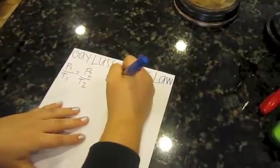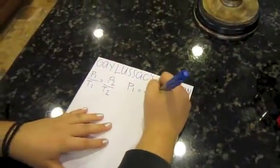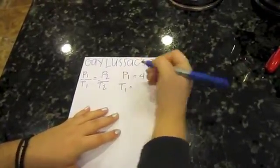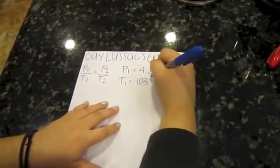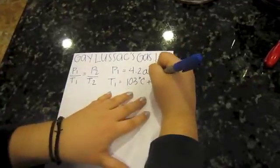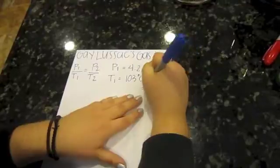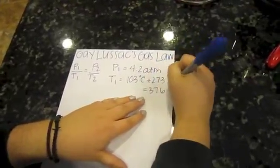P1 is equal to 4.2 ATM. T1 is equal to 103 degrees Celsius plus 273 since we're converting it to Kelvin, which equals 376 Kelvin.